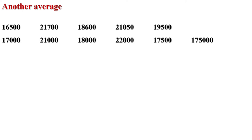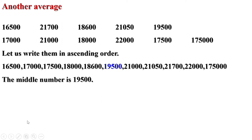Let us see how we can compute another average which gives a better overall indication of the monthly incomes of all 11 households. If we write all the incomes in increasing order and take the middle number, 5 of the households would have income less than this and 5 would have more. The middle number is 19,500. It is called the median. The median monthly income of the 11 households is 19,500 rupees. Of all 11 households, 5 have monthly income less than 19,500 rupees and 5 have more.